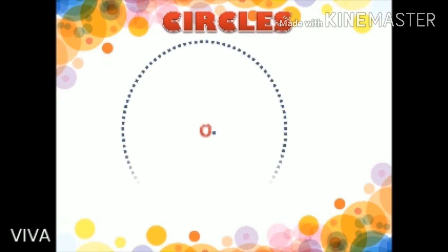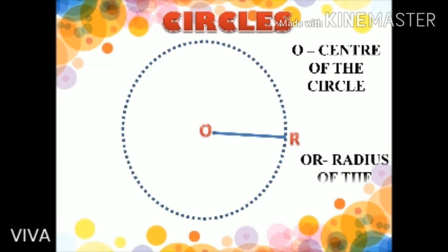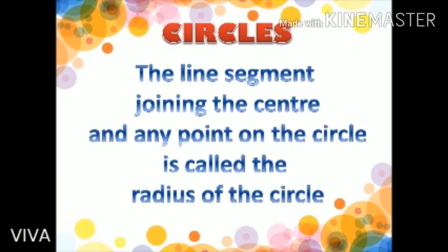Now, let us consider a circle with center O and a point R lying on the circle. Let us connect the points O and R. This line segment OR is called the radius of the circle. Hence, the line segment joining the center and any point on the circle is called the radius of the circle.